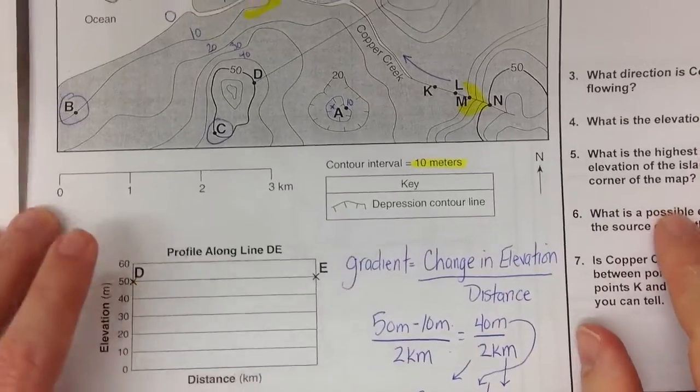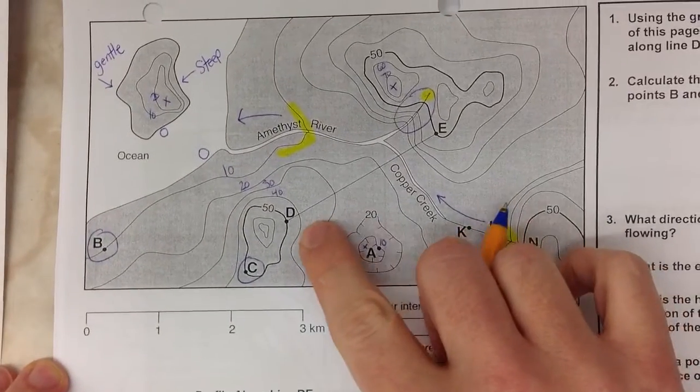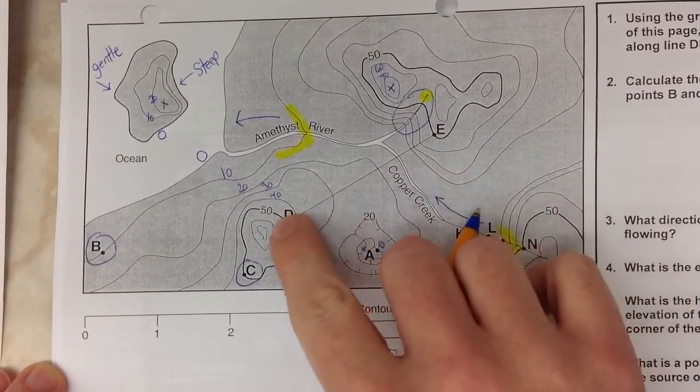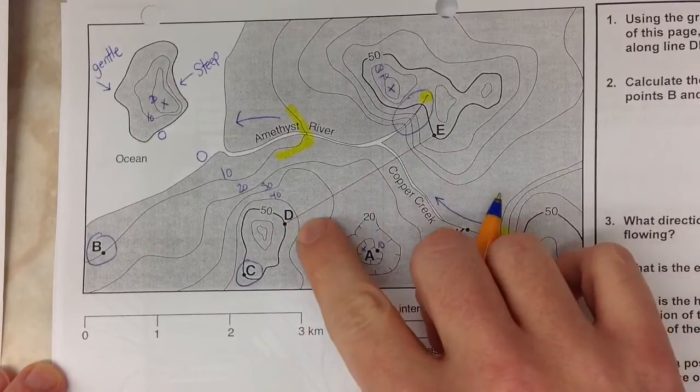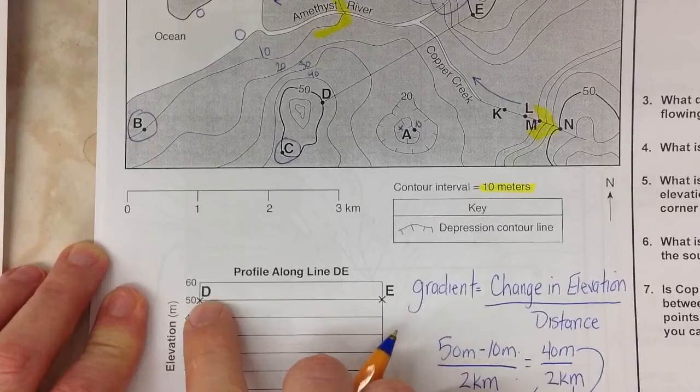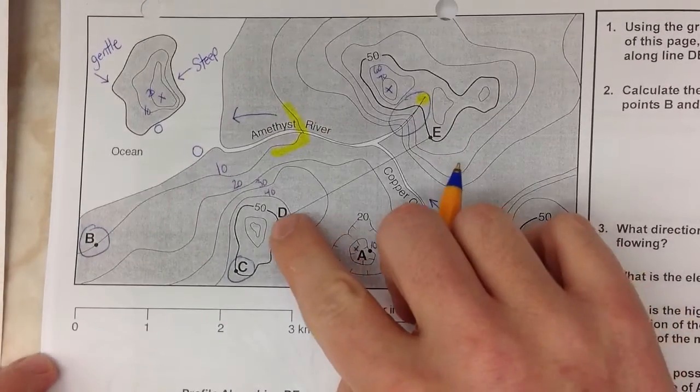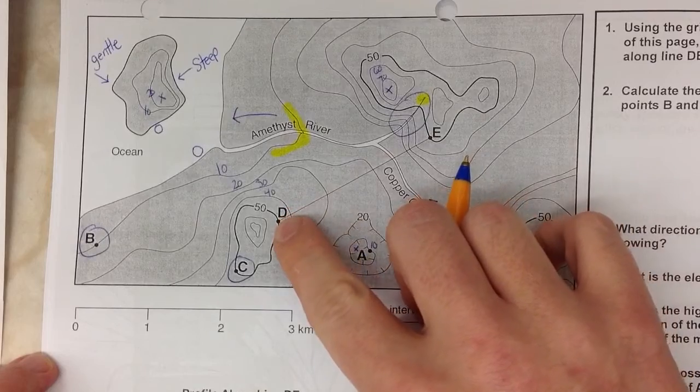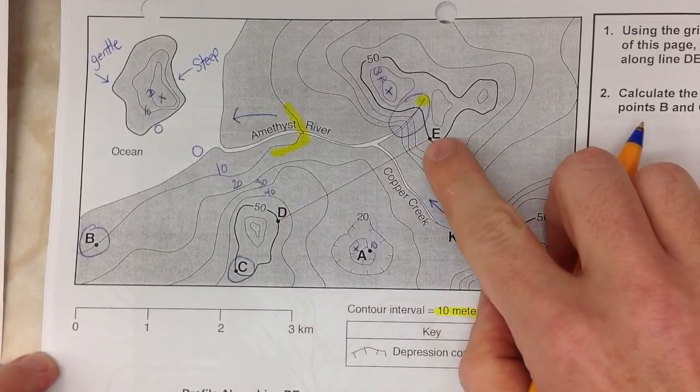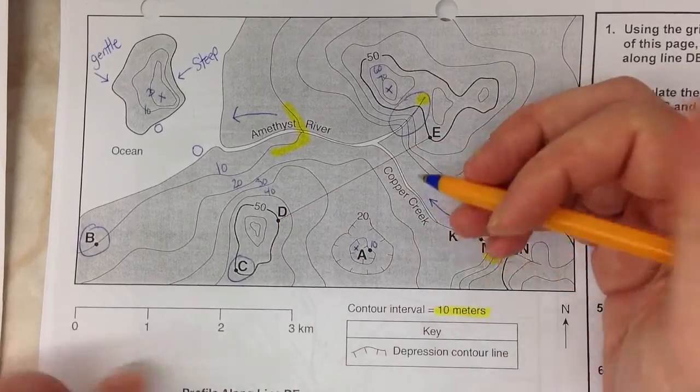The other feature that we can do off the map is something called a profile. A profile is just a side view of what the landscape is going to look like. So the first thing that you want to do is that my profile is going to be drawn between D and E. What I like to do is I like to actually physically put my elevations along my line that connects point D and point E. And I'll show you why that is in a moment.